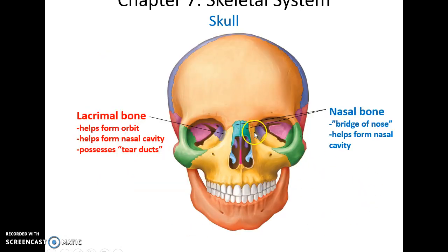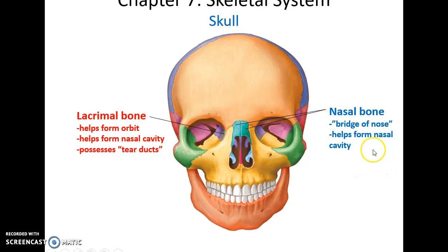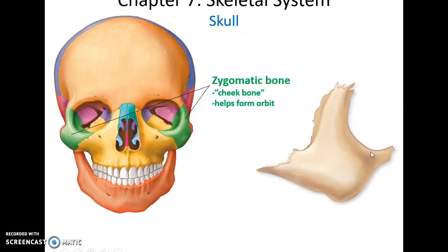The lacrimal bones help form the medial wall of the orbits and also form little ducts that carry tear fluid from the orbit down into the nasal cavity. The nasal bones help form the bridge of the nose and part of the roof of the nasal cavity. The zygomatic bones are the cheekbones and help form the lateral walls and floor of the orbits.